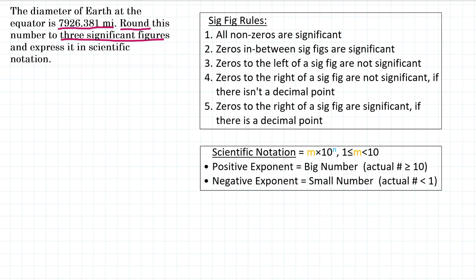Okay, so let's write our number down. So we have 7,926.381. And we are looking at three sig figs, three significant figures. So this should be pretty easy. We have our sig fig rules up on the right, but we're only going to need rule number one because every single digit in this number is a non-zero and all non-zeros are significant.